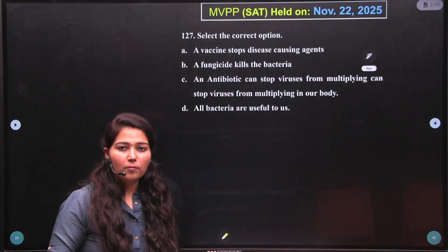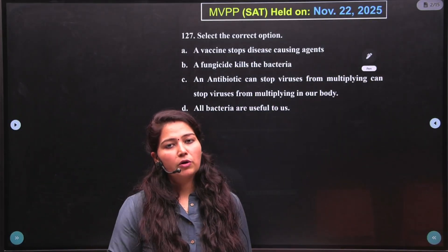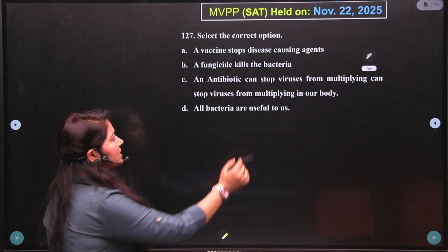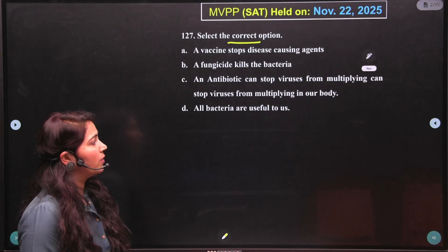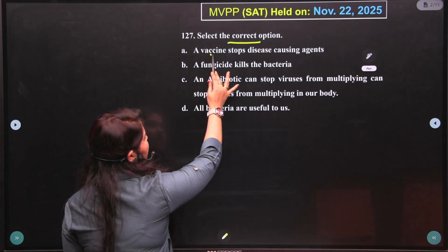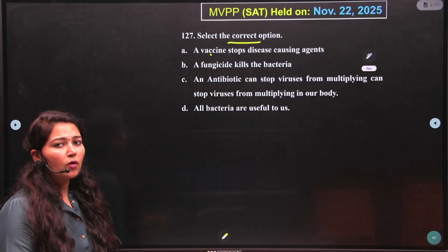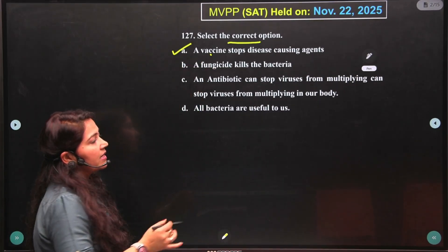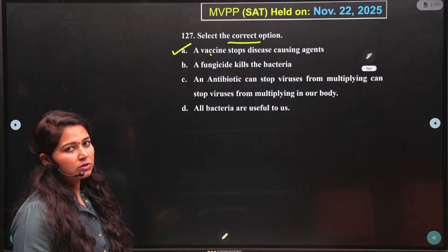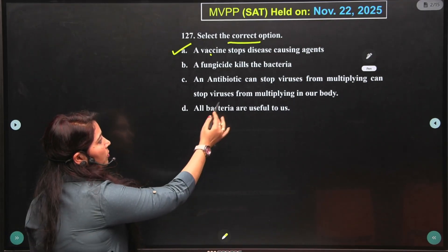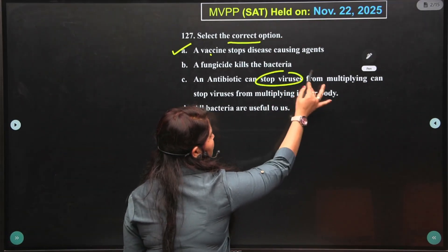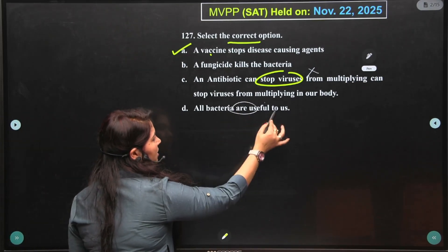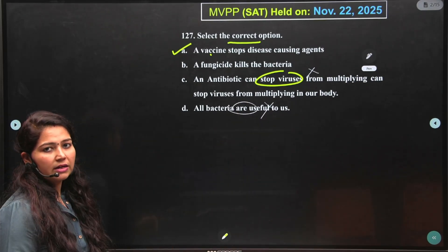The first question of bio starts from question number 127, select the correct option. A vaccine stops disease causing agent from multiplying — this statement is correct. A fungicide kills the bacteria — false, fungicides are used for fungus. An antibiotic can stop the virus — false. All bacteria are useful — also false. So the correct answer is A.